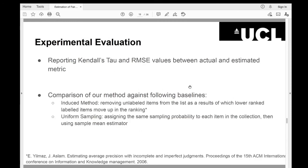To evaluate our experiments, we used Kendall's tau value and root mean square error value between actual and estimated metric. We further compare our method with induced method baseline, which is done by removing unlabeled items from the list as a result of which lower ranked labeled items move up in the ranking. And as a next baseline, we use uniform sampling that is done by assigning the same sampling probability to each item in the collection and then using sample mean estimator.